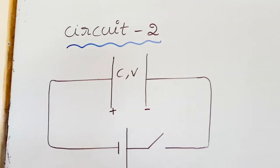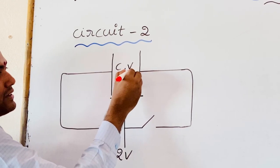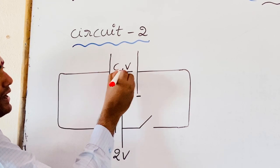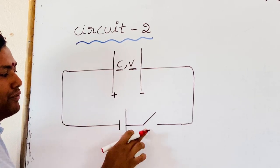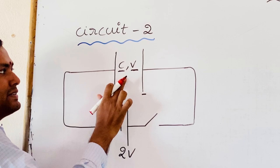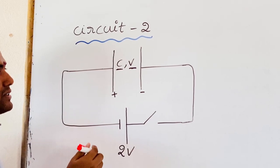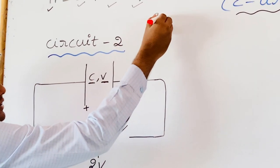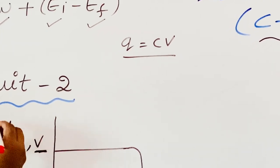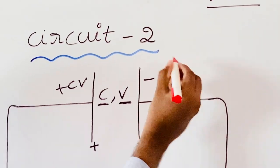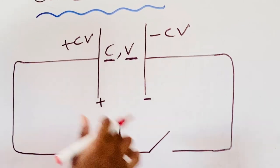Consider this circuit. Previously, this capacitor is charged — it has capacitance C and is at potential V. Before closing the switch, the capacitor is charged to potential V. At that time, what is the charge on the plates of the capacitor? We know Q = CV. So this plate has charge plus CV and this plate has charge minus CV.